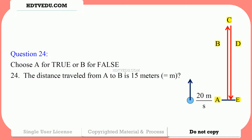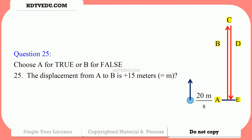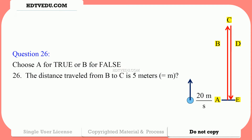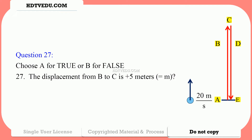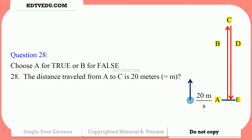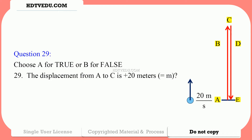Question number 24: Choose A for true or B for false. The distance traveled from A to B is 15 meters. Question number 25: The displacement from A to B is positive 15 meters. Question number 26: The distance traveled from B to C is 5 meters. Question number 27: The displacement from B to C is positive 5 meters. Question number 28: The distance traveled from A to C is 20 meters. Question number 29: The displacement from A to C is positive 20 meters.